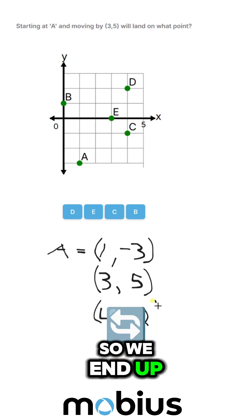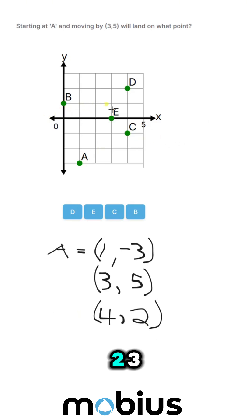So we end up at 4, 2. And 4, 2, 1, 2, 3, 4 over, and 1, 2 up will be point D.